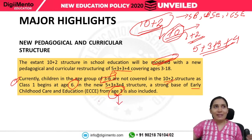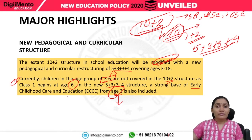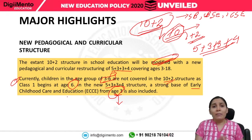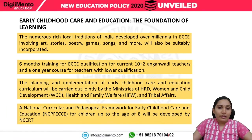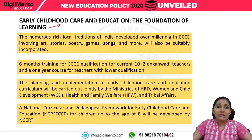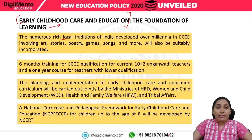For example, my daughter who is 4 years old attends a play school and is in LKG. The education she receives is not currently considered formal education, but now she will also become part of the formal education system. The Early Childhood Care and Education plan will incorporate the numerous rich local traditions of India developed over millennia — involving art, stories, poetry, games, songs, and more — as the foundation of learning.